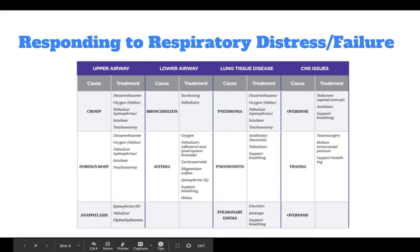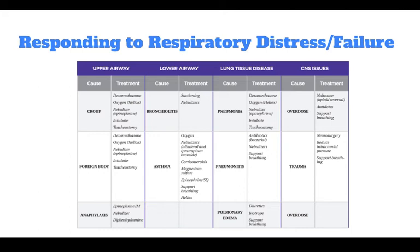For the upper airway, a cause could be croup, treated with dexamethasone, oxygen, nebulizer, epinephrine, intubation, or tracheostomy. For a foreign body, treatments include dexamethasone, oxygen, nebulizer, intubation, or tracheostomy. For anaphylaxis, treatments include epinephrine, nebulizer, or diphenhydramine.